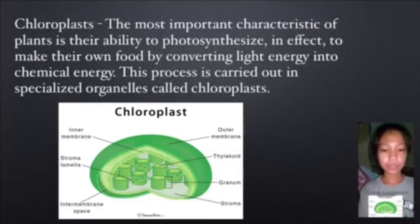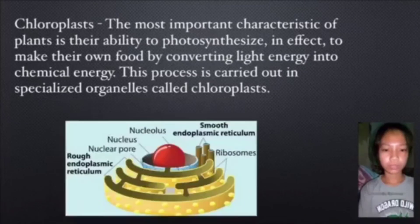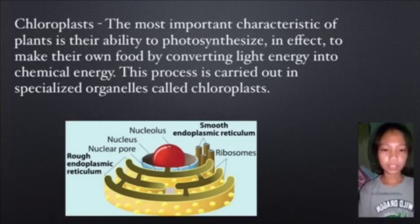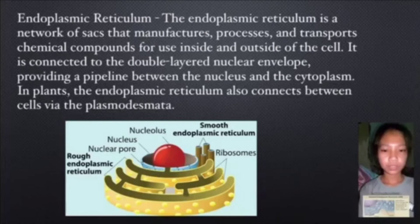Chloroplasts. The most important characteristic of plants is their ability to photosynthesize — in effect, to make their own food by converting light energy into chemical energy. This process is carried out in specialized organelles called chloroplasts.